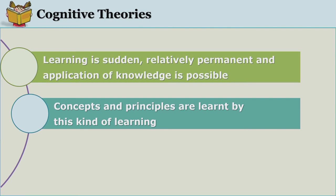Once we learn concepts, we combine one or two concepts to understand a principle. For example, density is mass per unit volume — density is a principle, and mass and volume are two concepts. Learning of concepts leads to learning of principles, and whether it is concepts or principles, they need a clear understanding of the organization of the components involved. This kind of learning expects the mind to be always active — perceiving the whole situation, understanding the relationship between the parts, and finding meaningful patterns in that whole situation. Mind is instrumental in this kind of learning. Once learning occurs, it is relatively permanent and you can use this knowledge in daily life situations — that is, you can apply this knowledge elsewhere.